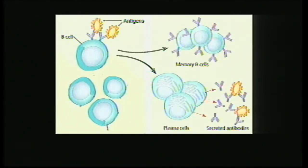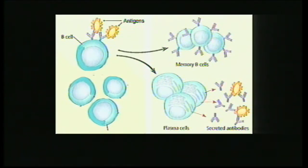When B cells proliferate, they produce two types of cells: memory B cells and plasma cells. Memory B cells stay as memory cells — useful for the next exposure. Plasma cells immediately produce antibodies to attack the pathogen right away. After months or years, if attacked by the same pathogen again, the memory cells — already familiar with that pathogen — produce those antibodies. It requires initial exposure to a pathogen or antigen in order to have acquired immunity working.